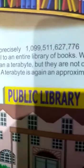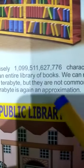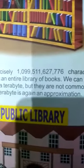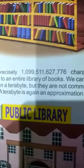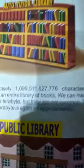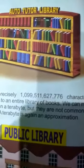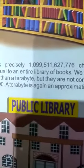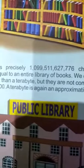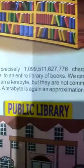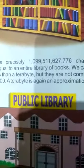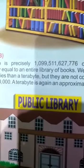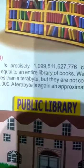A terabyte is again an approximation. Earlier we talked about one shelf for a smaller unit, but one terabyte is equal to a whole library — meaning all the books combined in a library together make up one terabyte, or 1 TB.